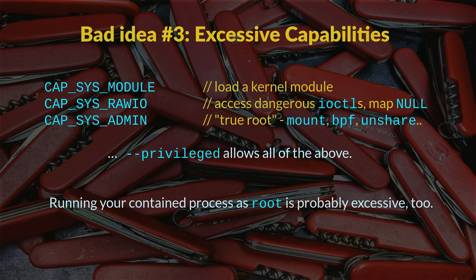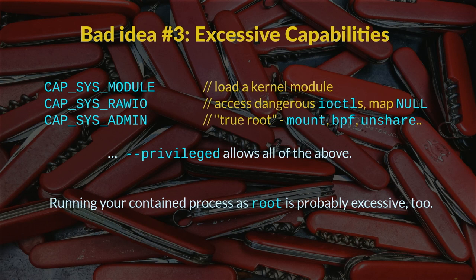While Docker drops a bunch of capabilities by default, sometimes people add them back in. CAP_SYS_ADMIN is largely considered true root. It can vary depending on the container runtime and any LSMs interfering — AppArmor would restrict mount, but wouldn't necessarily restrict eBPF. On some operating systems like CentOS, sysadmin is less restricted. If you have sysadmin, you can remount proc read-write, which can enable a bunch of the user mode helpers. Also, running as root is largely excessive inside the container, and not doing that helps.